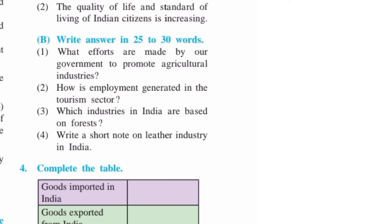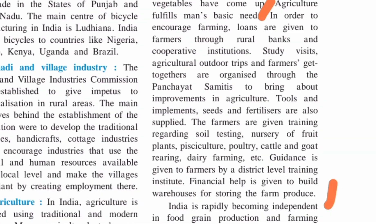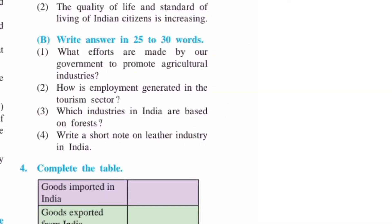Question number B: Write the answer in 25 to 30 words. First one: What efforts are made by our government to promote agricultural industries? This answer is given on page number 44. Write from 'In order to encourage farming' up to 'farm produce,' and write it point-wise.